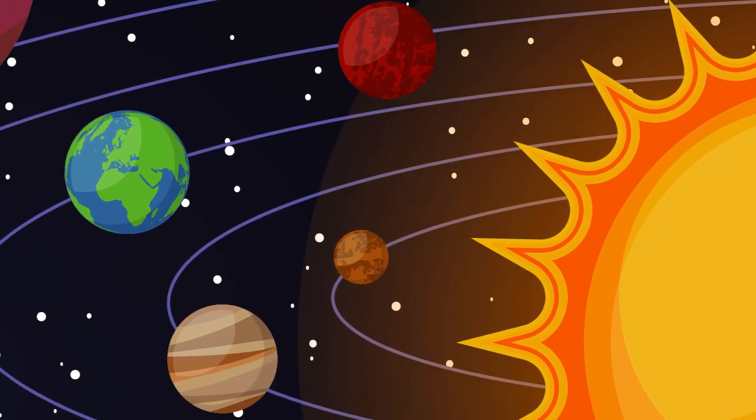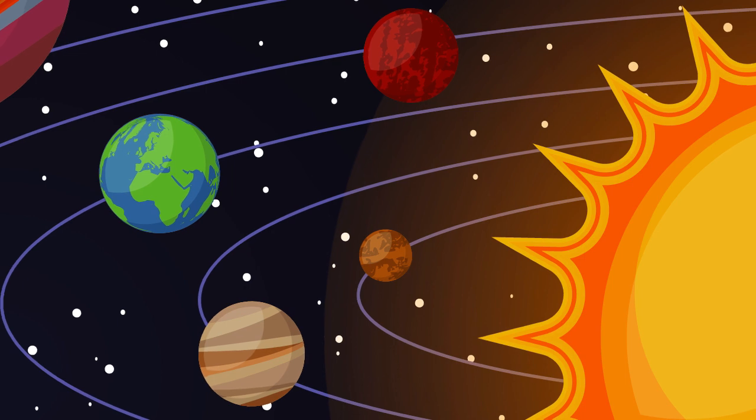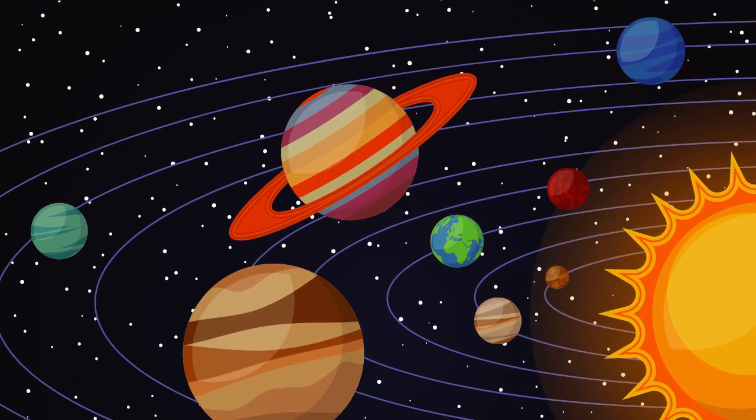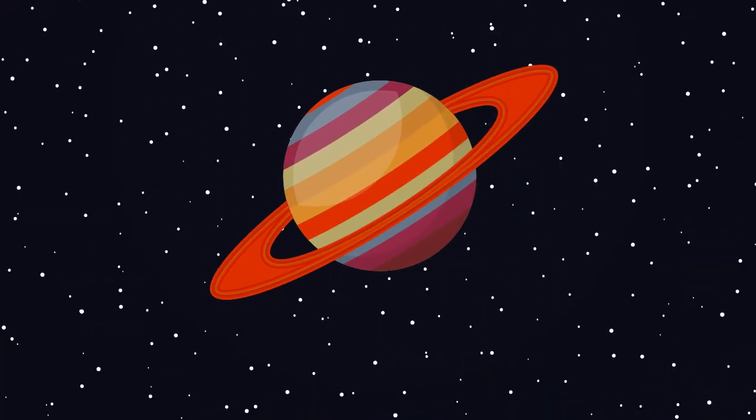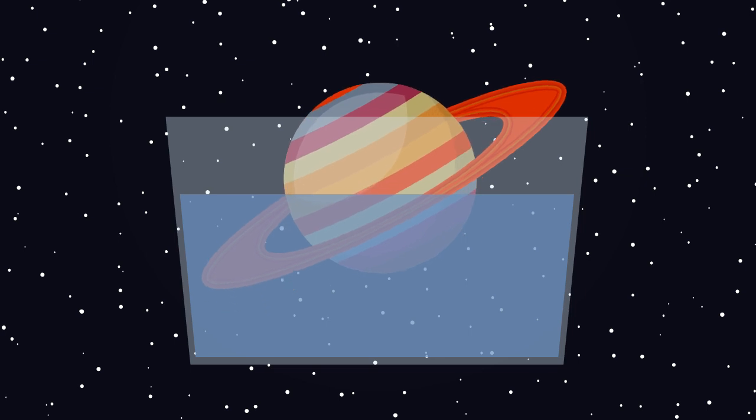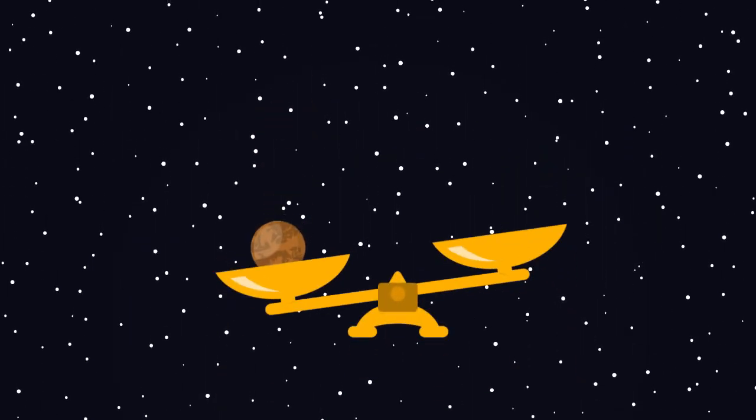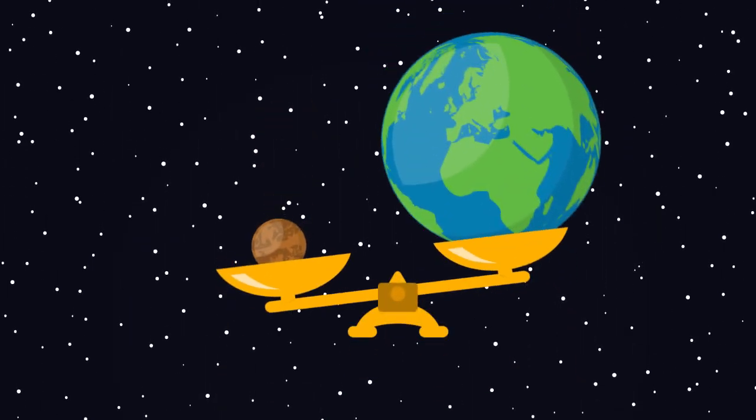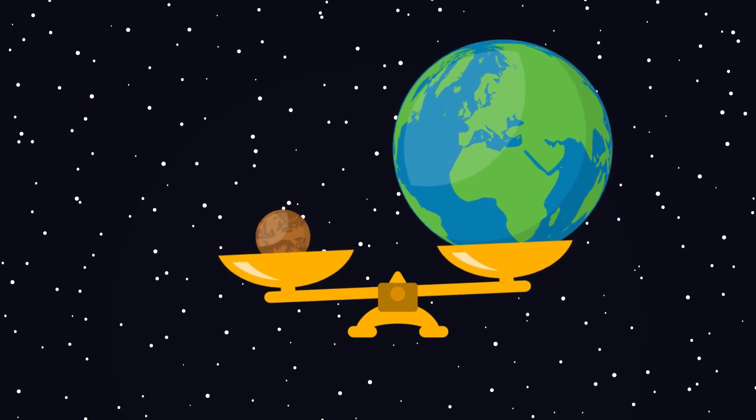The terrestrial planets, the four rocky spheres orbiting closest to the sun, are all denser than the four outer gas giants. If Saturn were placed in a big enough glass of water, for instance, it would float. It should be noted that Mercury, while much smaller in size than Earth, is the second most dense planet in the system.